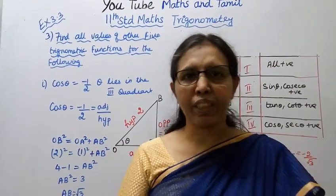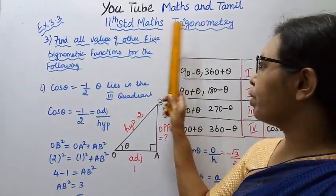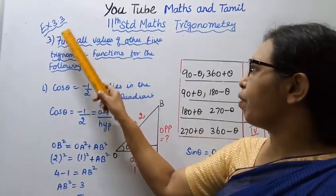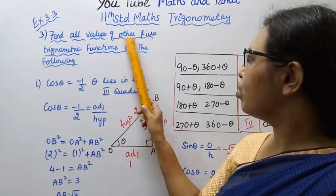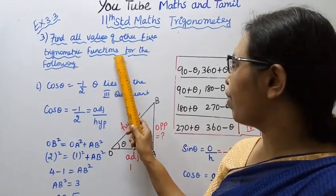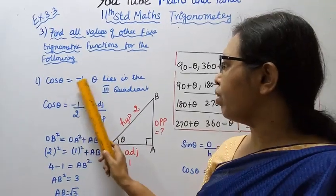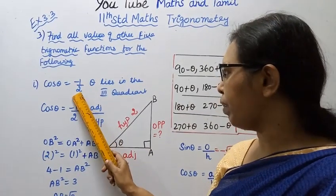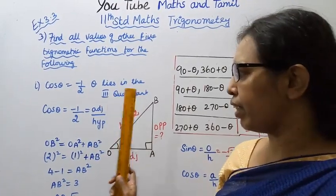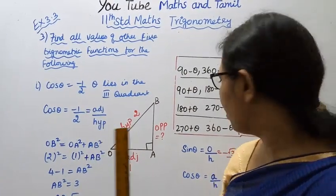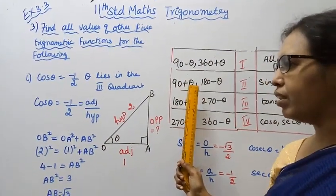Hello students, welcome to Max and Tamil channel. 11th Standard Max Trigonometry, Exercise 3.3: Find all the values of the other 5 trigonometric functions for the following. First value: cos theta equals minus 1 by 2, theta lies in the third quadrant.